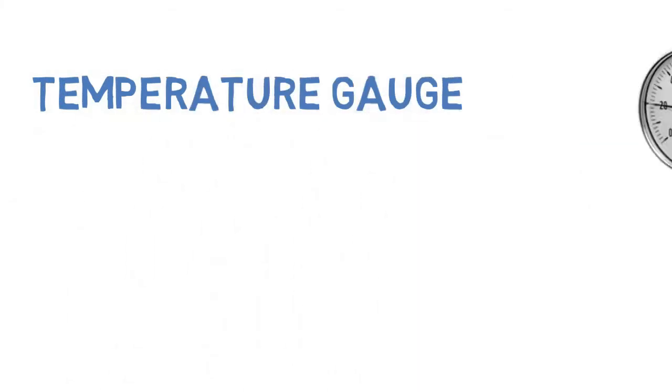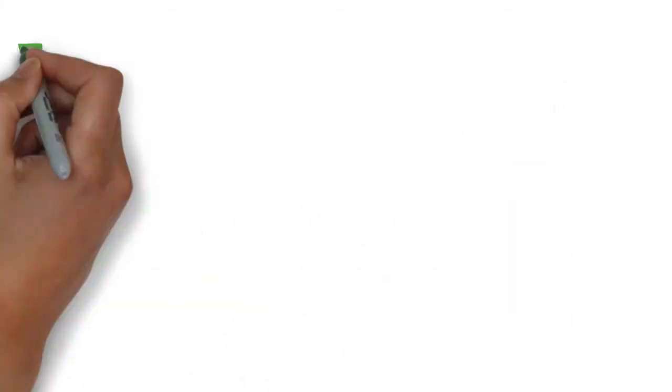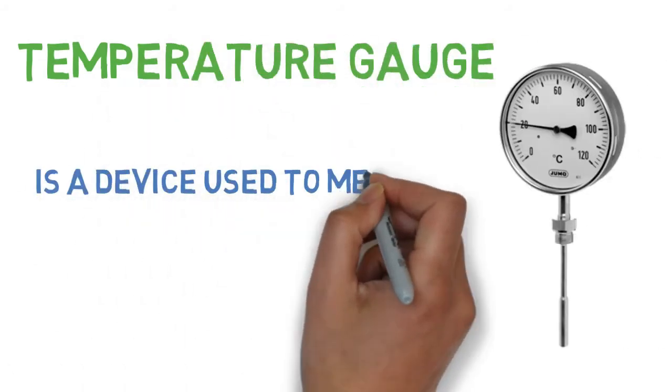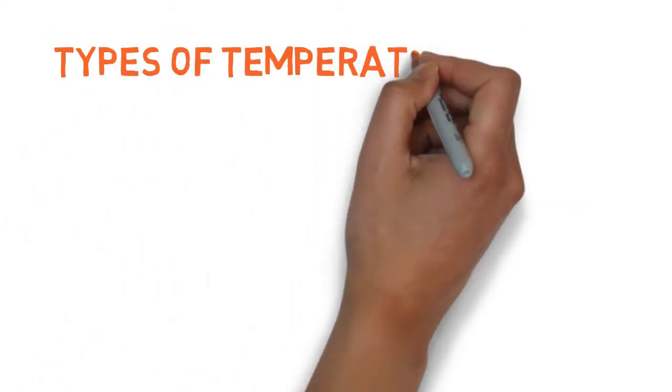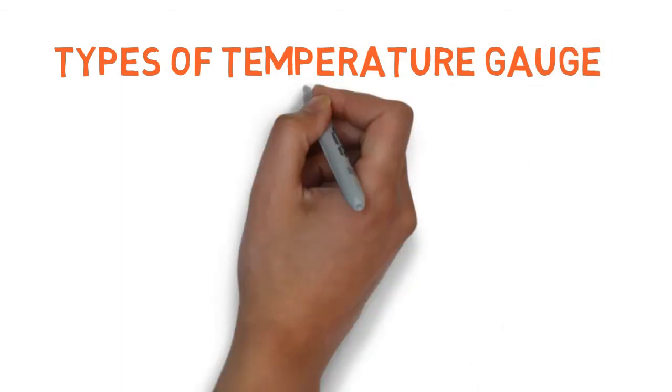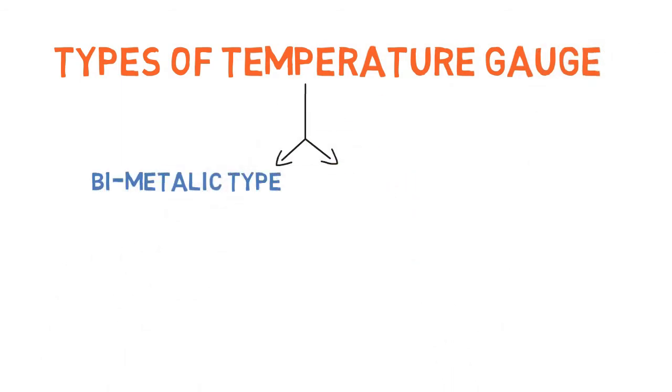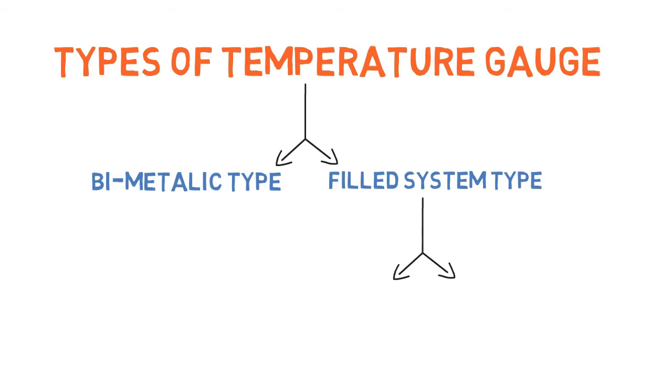Temperature gauge types and working principle. A temperature gauge is a device used to measure temperature at a point being measured. There are two types in temperature gauge: bi-metallic type and filled system type. Filled system type is further divided into two types.